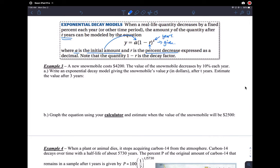Yeah, we've used this before, and we call this quantity 1 minus R the decay factor. So 1 minus R, R is a percentage, which is a decimal between 0 and 1. If I subtract that from 1, then I will also get a decimal. So this will always be a number between 0 and 1.